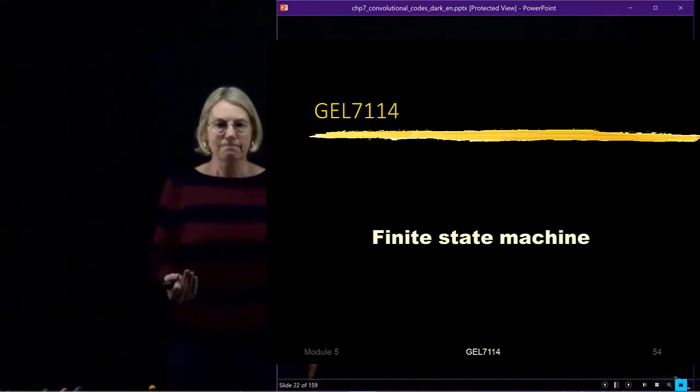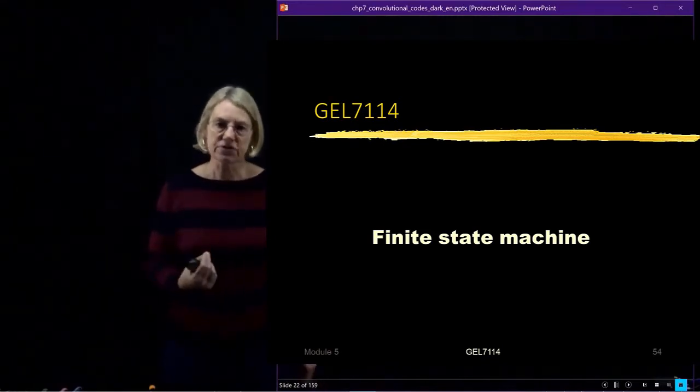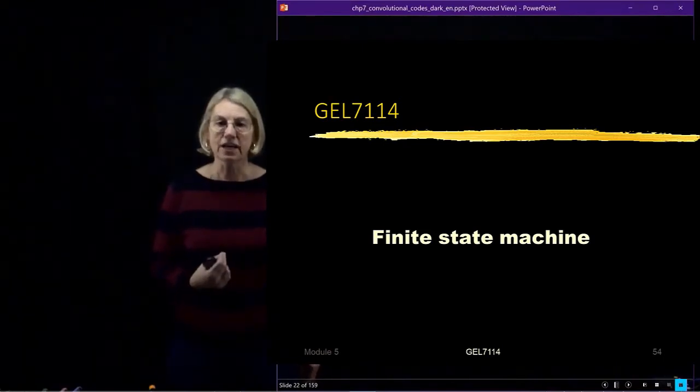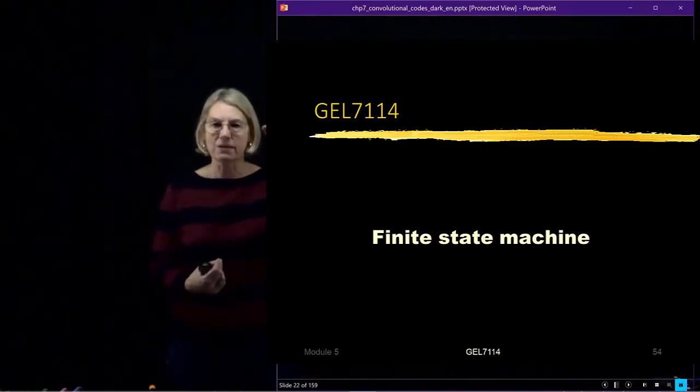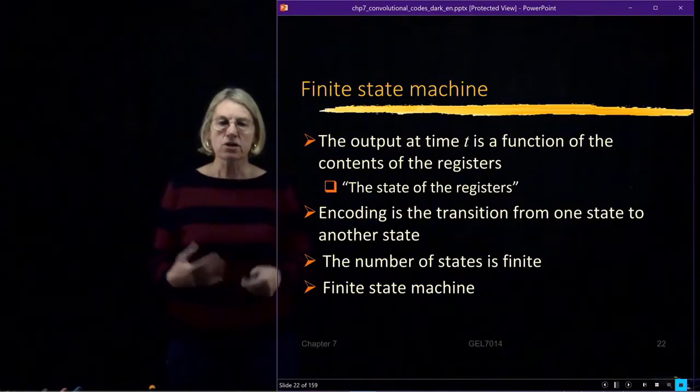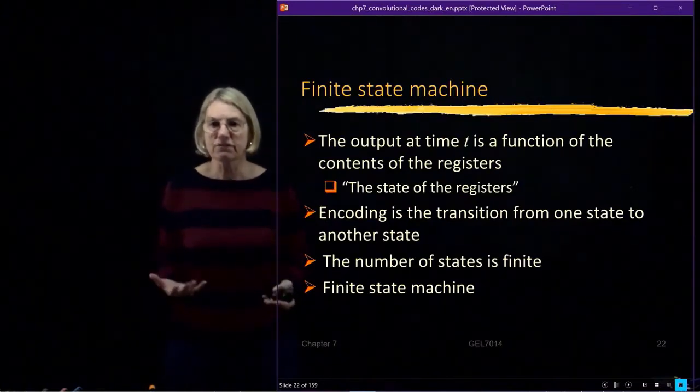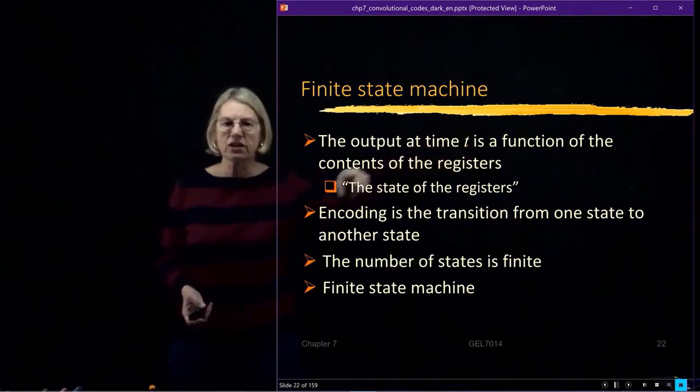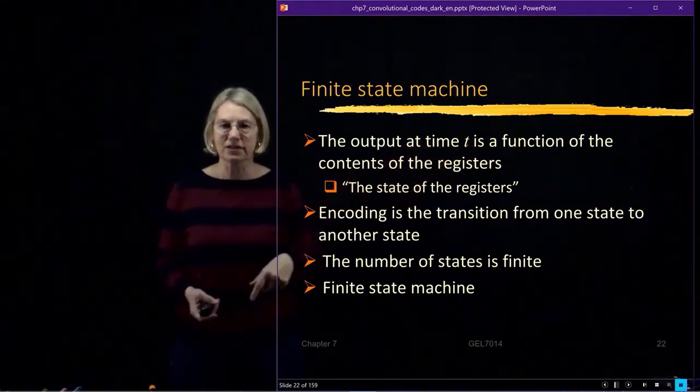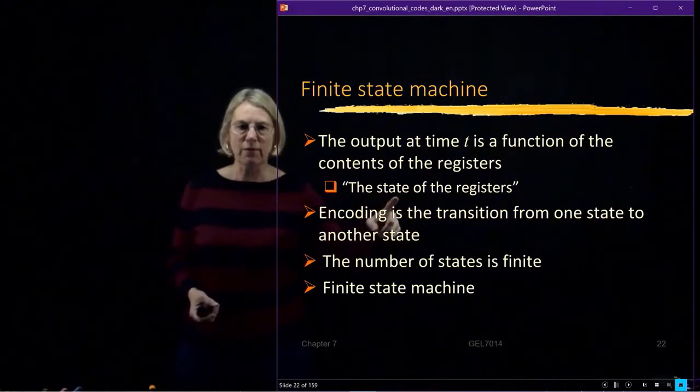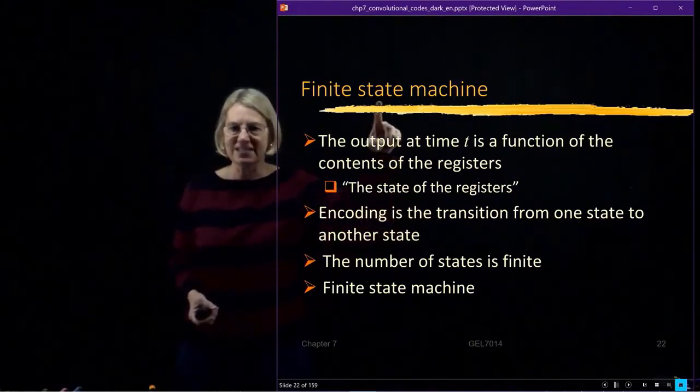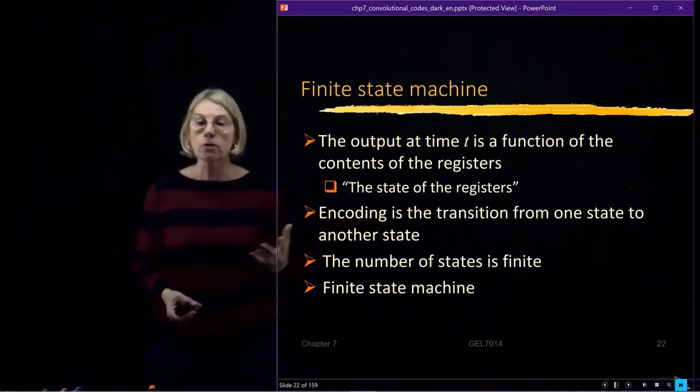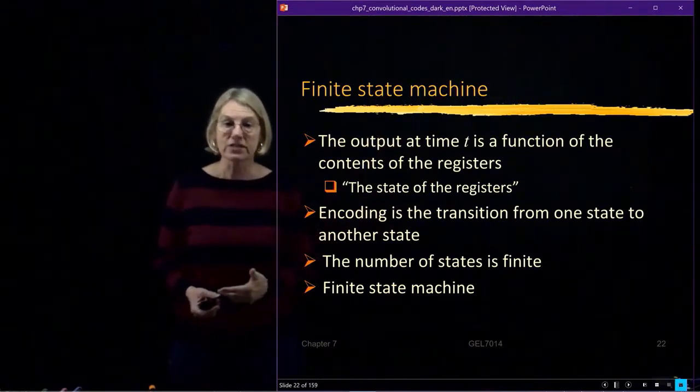So the first concept that's very important to understand about convolutional encoding is the interpretation of the encoder as a finite state machine. So when I talk about a finite state machine, what's the definition? The output at a certain time is a function of the contents of the registers. And we call that the state of the registers, which is why we have this word 'state'. So the state of the registers essentially determines what the output is going to be.